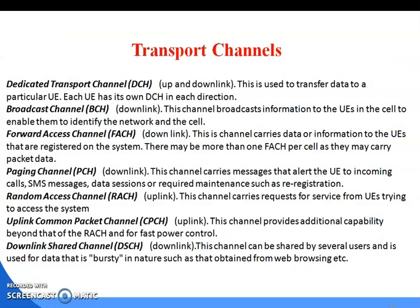Next, coming to the transport channels. Dedicated transport channel DCH, both uplink and downlink — this is used to transfer data to a particular UE. Each user equipment UE has its own DCH in each direction. Next is Broadcast Channel BCH, downlink — this channel broadcasts information to UEs in the cell to enable them to identify the network and the cell. Forward Access Channel FACH, downlink — this channel carries data or information to UEs that are registered on the system, and there may be more than one FACH per cell as they may carry packet data.